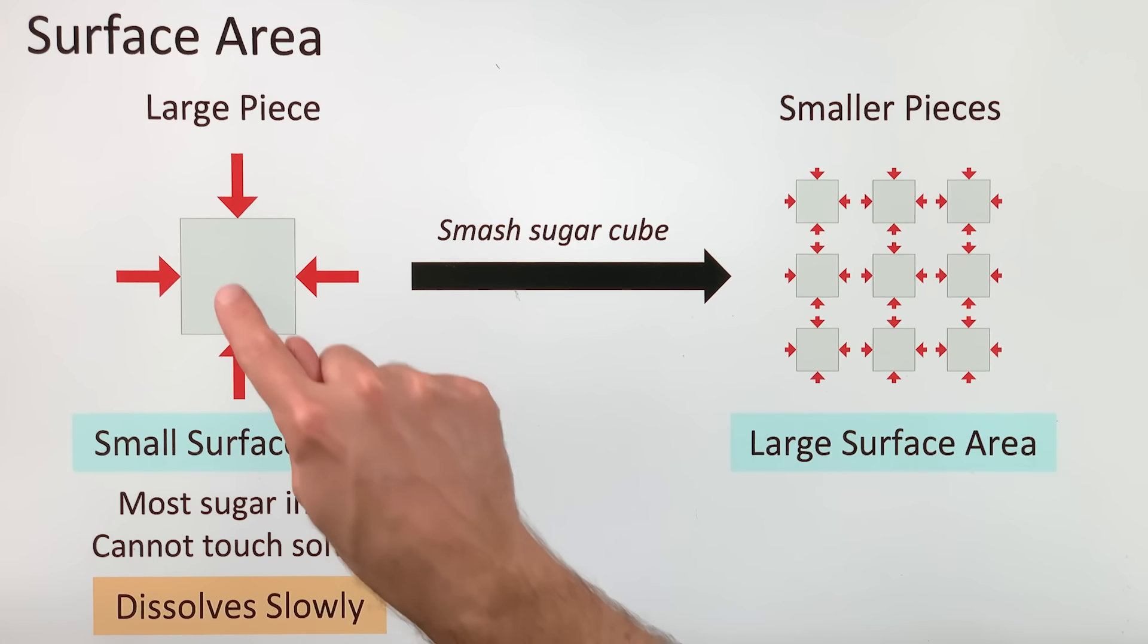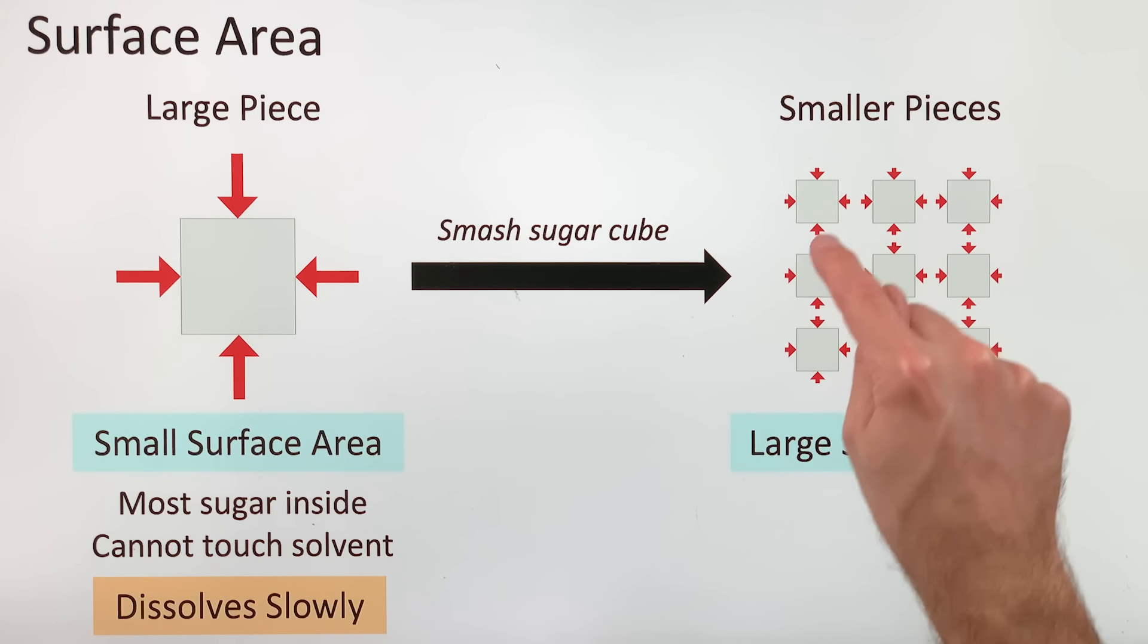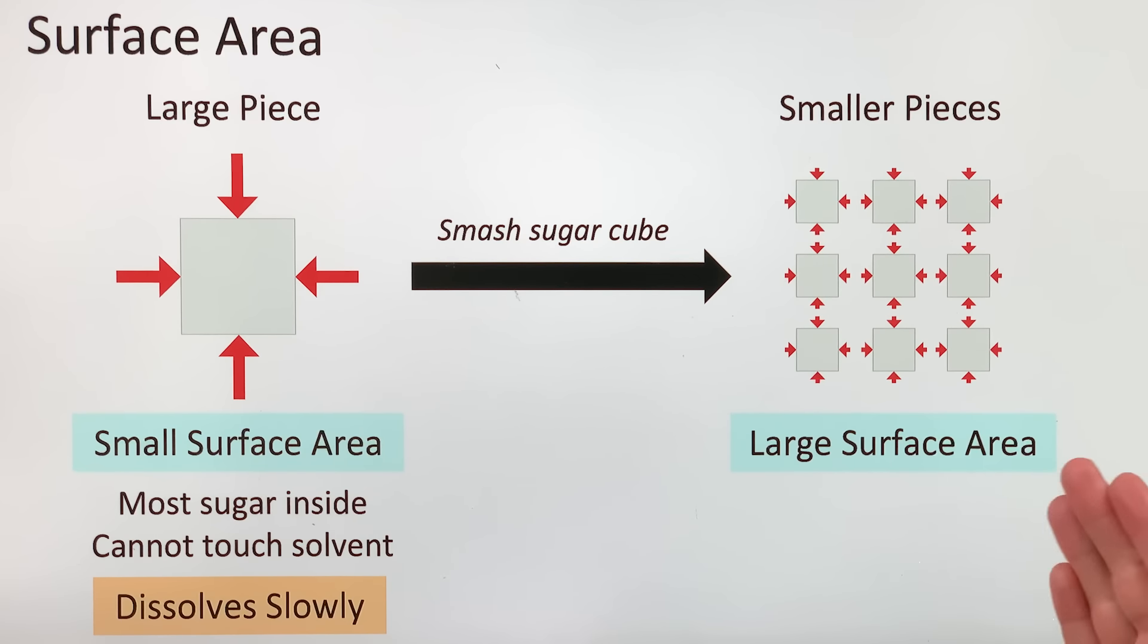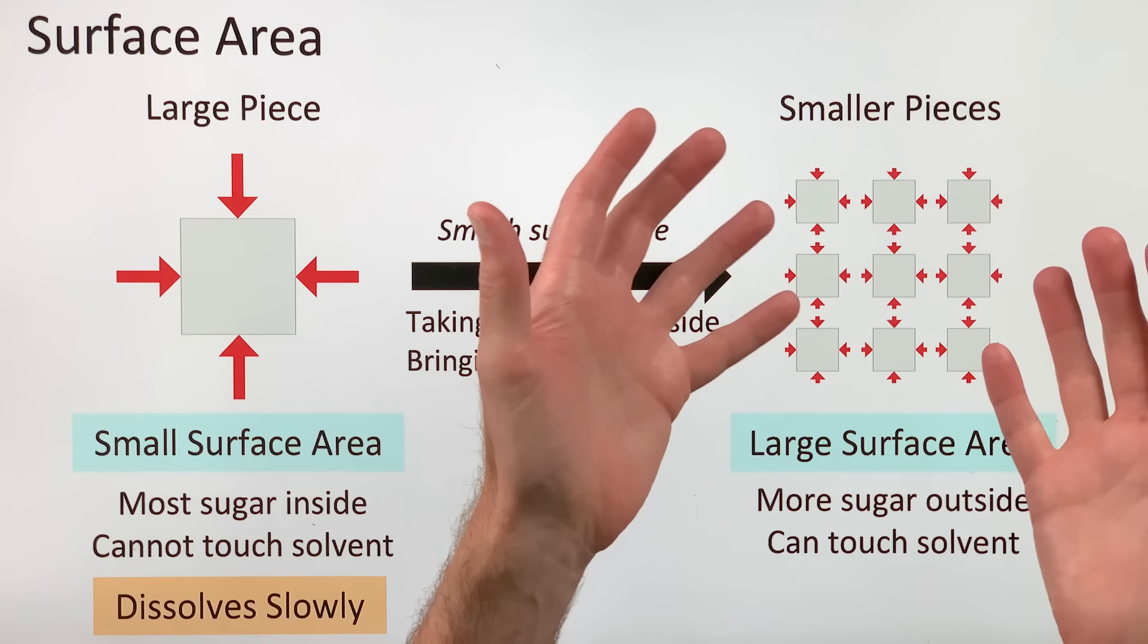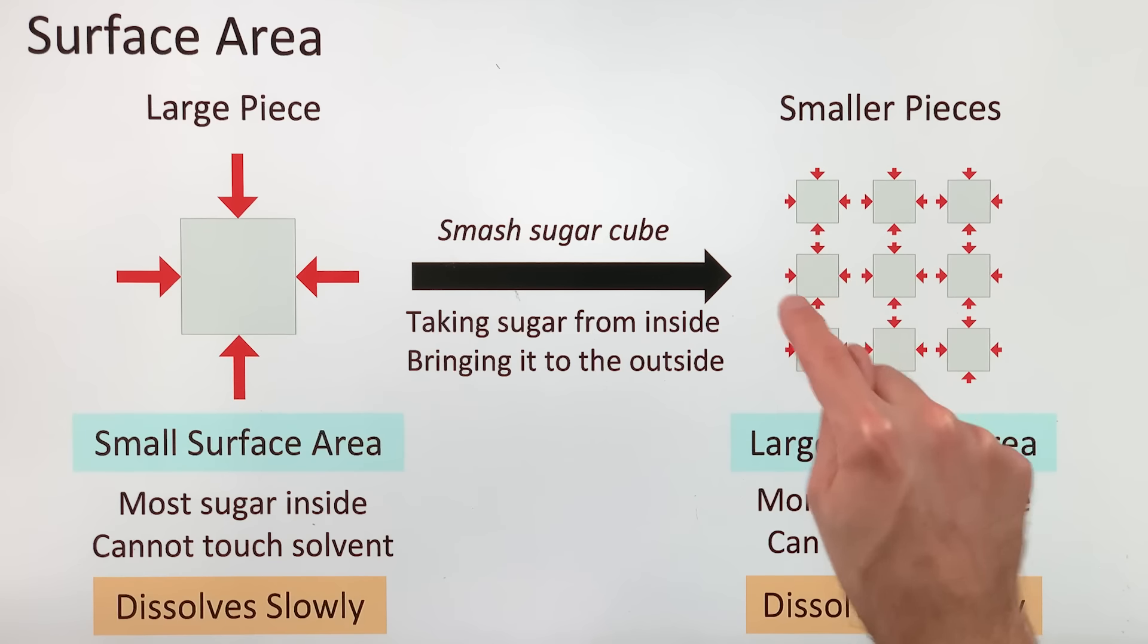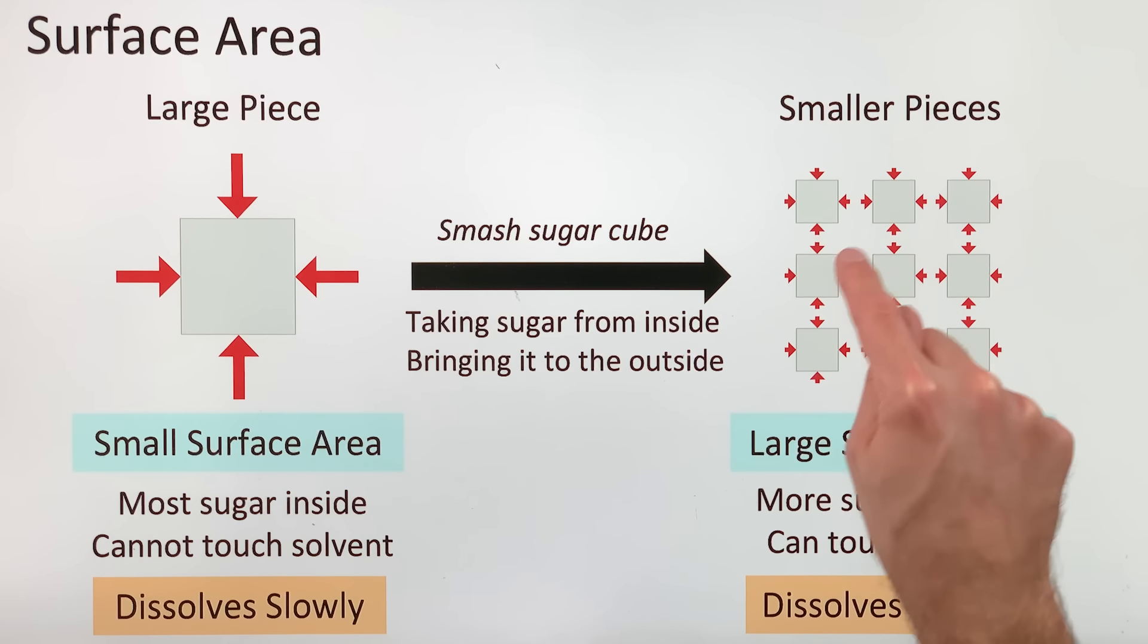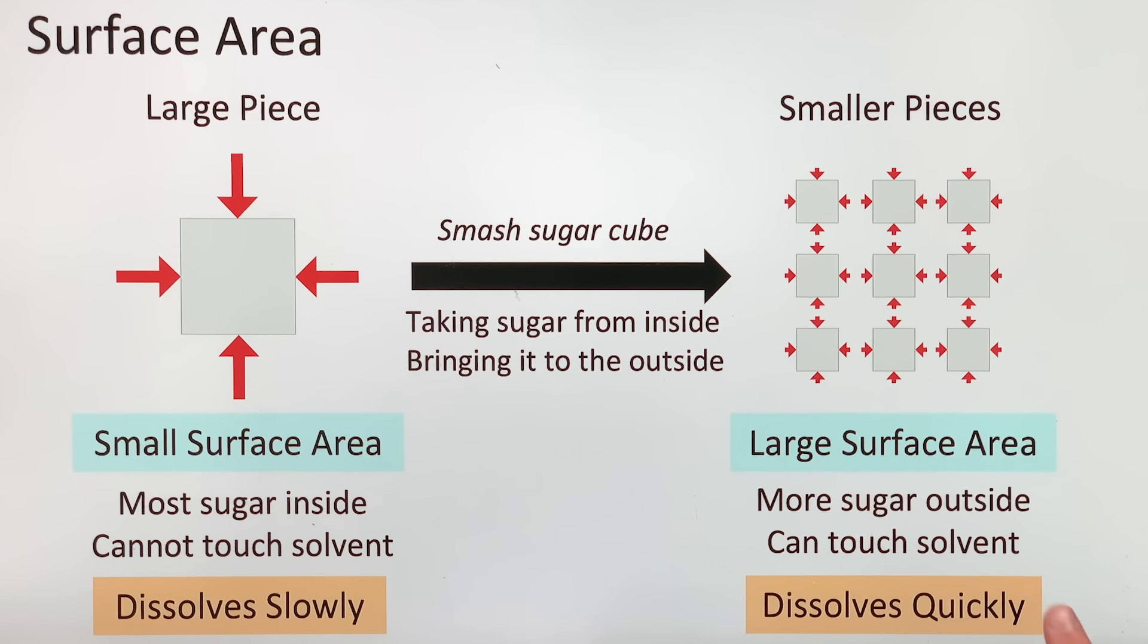But when a solid is finely granulated and broken into smaller pieces, there is larger surface area available to interact with solvent. You're basically taking sugar that was inside the cube and bringing it to the outside so that it can touch solvent. So more sugar is on the outside. All of these surfaces can touch or interact with solvent molecules, and so dissolving can happen in all of these places. So it dissolves more quickly.